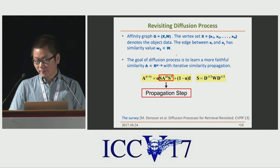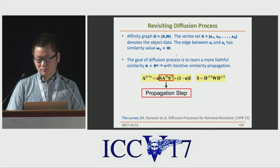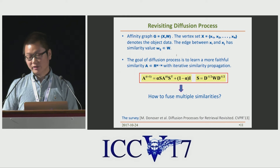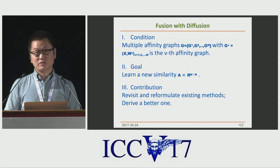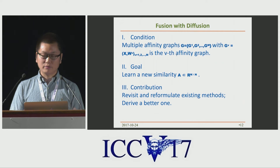It should be mentioned that there are many variants of diffusion process, as summarized in a paper published in TPAMI 2013. On the basis of this diffusion process, how can we fuse multiple similarities? That is to say, the condition of the fusion with diffusion framework is that we have multiple affinity graphs from G1 to Gm, and our goal is still to learn a new similarity A. In this work, we will revisit and reformulate several existing methods to see if we can derive a better one.